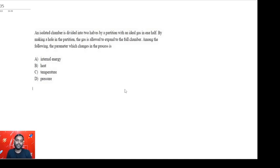Next question: An isolated chamber is divided into two halves by a partition with an ideal gas in one half. By making a hole in the partition, the gas is allowed to expand to the full chamber. Among the following, the parameter which changes in the process is...